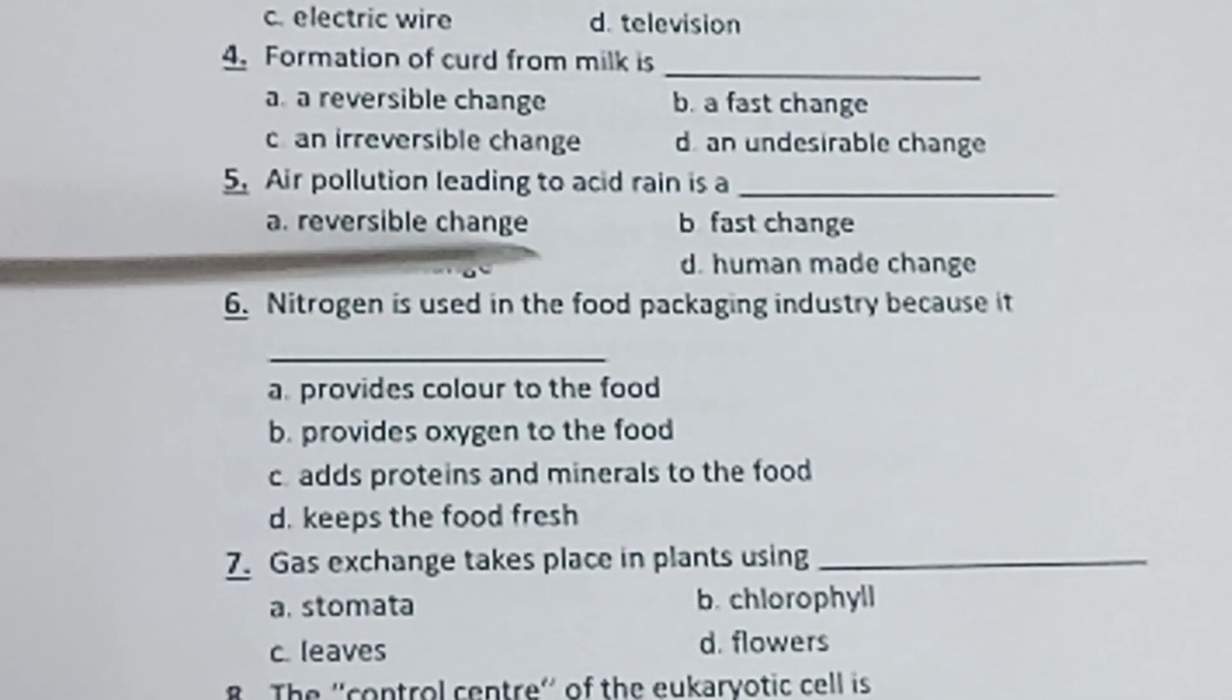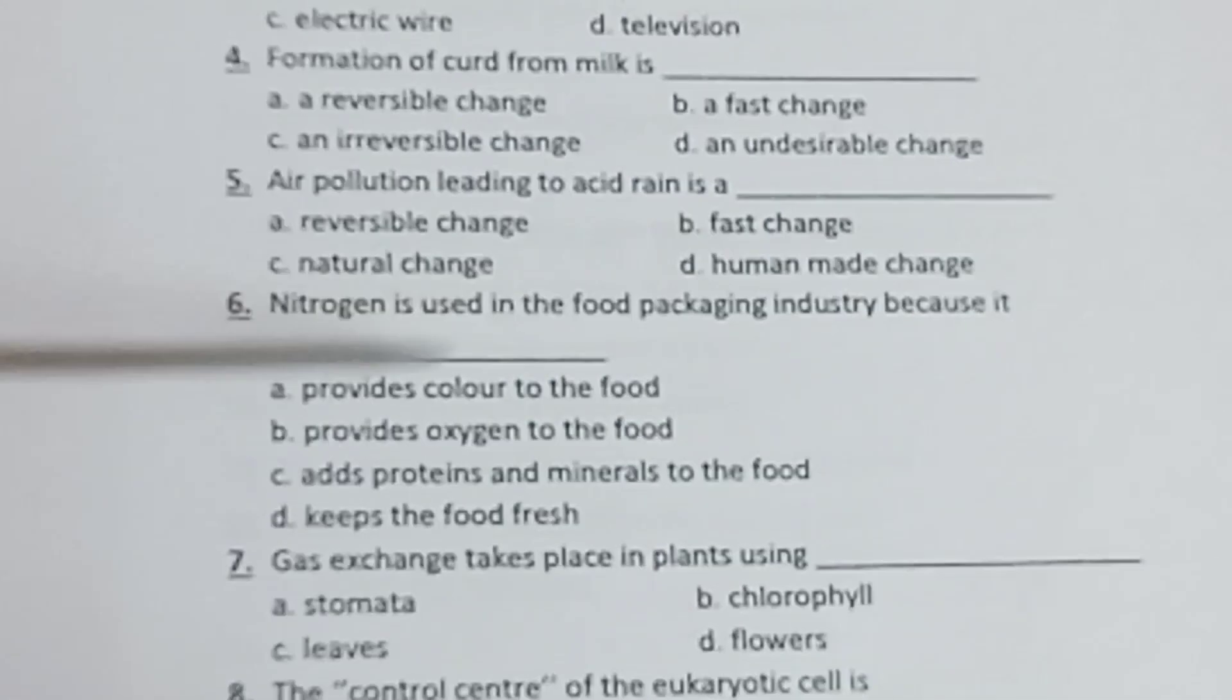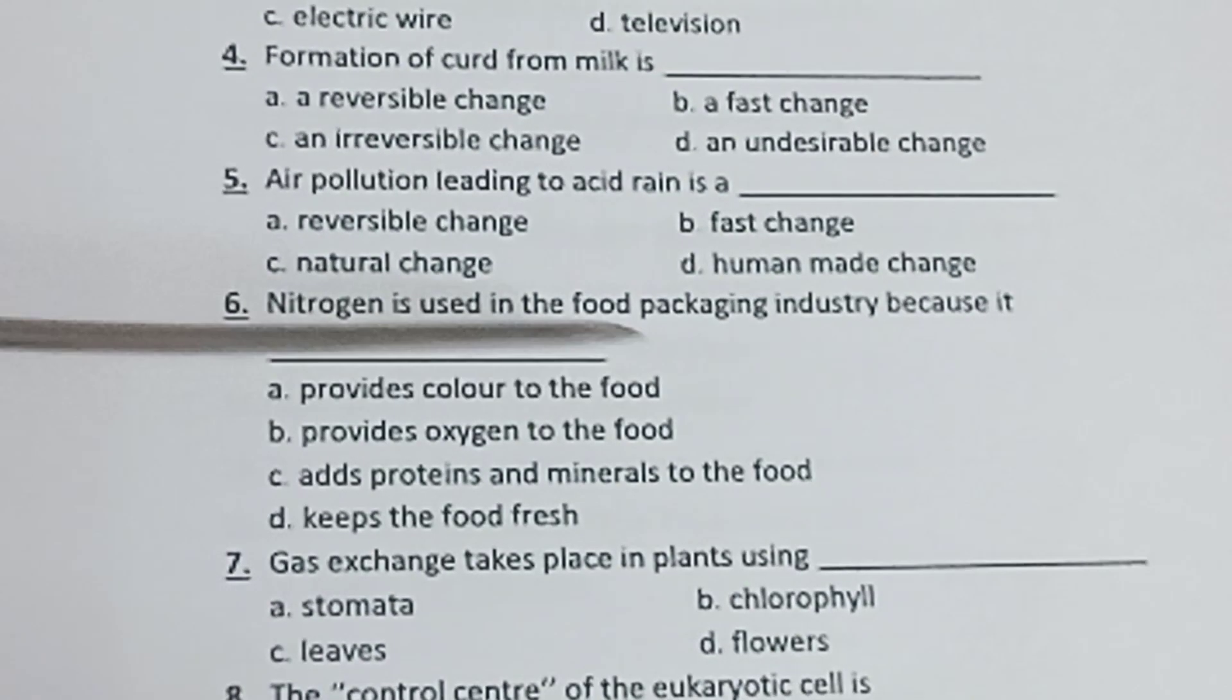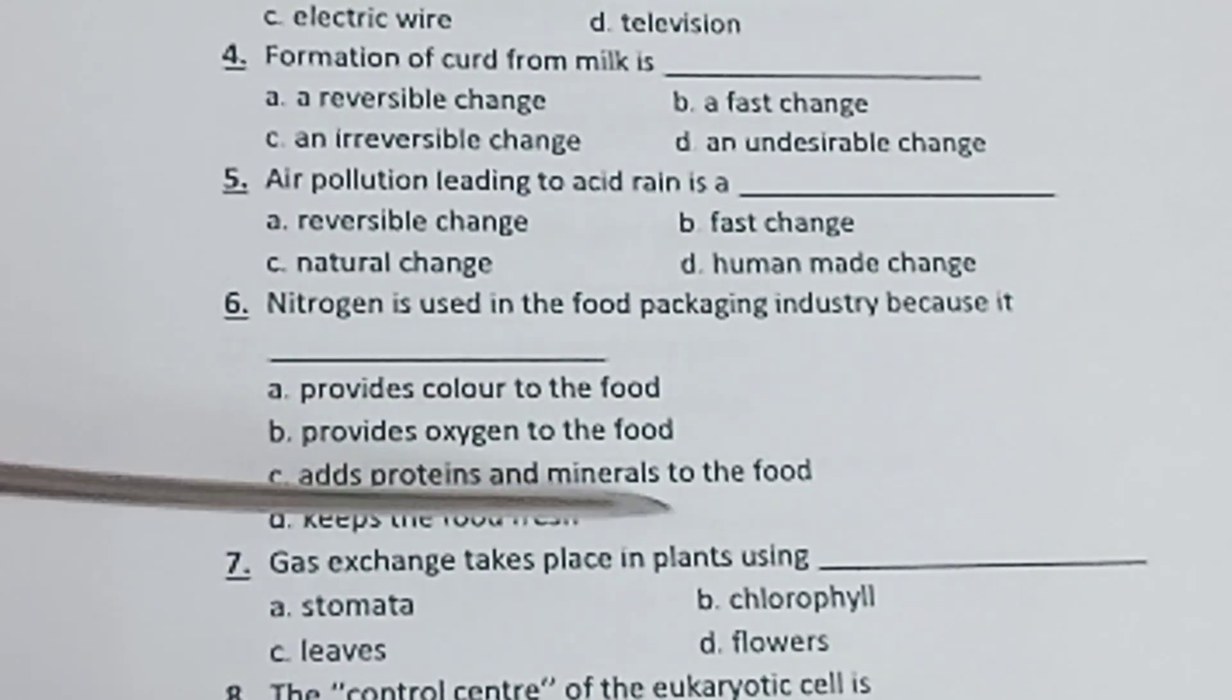Sixth one: Nitrogen is used in the food packaging industry because it - a) provides color to the food, b) provides oxygen to the food, c) adds proteins and minerals to the food, d) keeps the food fresh.